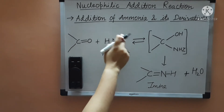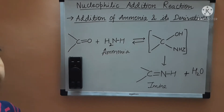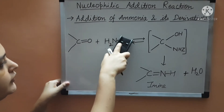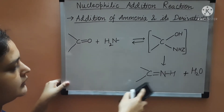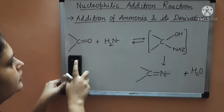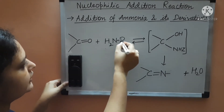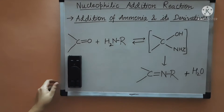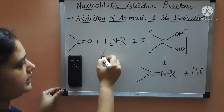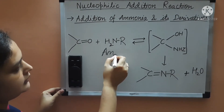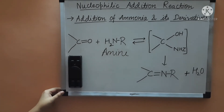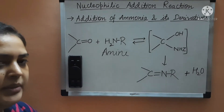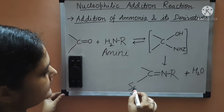If instead of a hydrogen atom there is R, that is an alkyl group, then Z will be R and the final product will also have R. The reactant R-NH2 is an amine. The product is known as a Schiff's base or substituted imine, where the nitrogen atom is attached to an alkyl group.